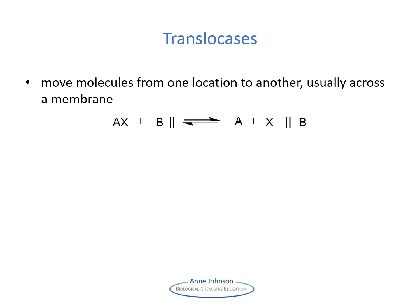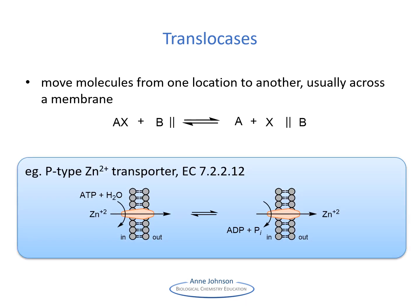The final class of enzymes are the translocases. These catalyze the movement of ions or molecules across membranes, or sometimes their separation within membranes. If energy is needed, it often comes from hydrolysis of nucleotide triphosphates such as ATP. The example shown here is for a translocase that expels divalent metal ions — such as zinc, lead, and cadmium — out of cells, with the expulsion energy coming from hydrolysis of ATP.